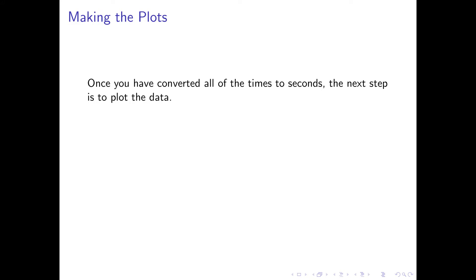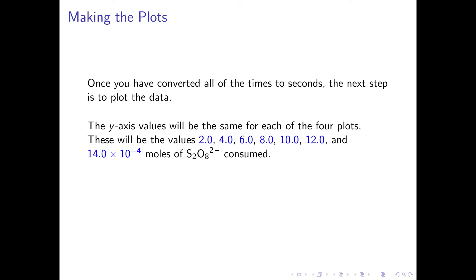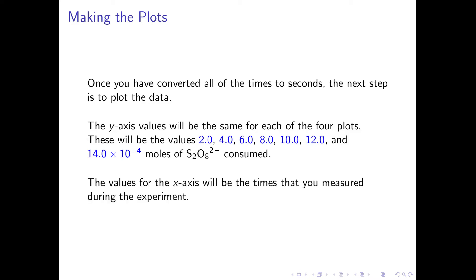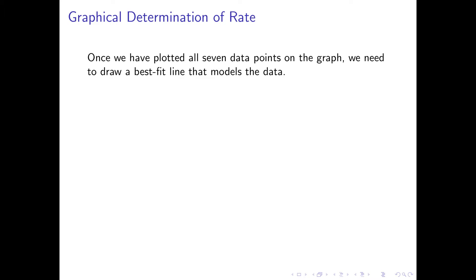Once you have converted all of the times to seconds, the next step is to plot the data. The y-axis values will be the same for each of the four plots, taking the values 2, 4, 6, 8, 10, 12, and 14 times 10 to the negative 4 moles of peroxydisulfate consumed. The values for the x-axis will be the times measured during the experiment. Once we have plotted all seven data points, we need to draw a best-fit line that models the data.